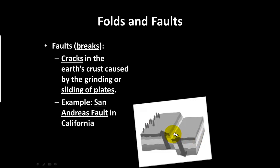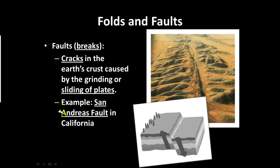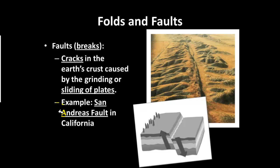Faults are different from folds. Faults are breaks or cracks in the Earth's surface caused by plates grinding or sliding apart. A well-known example is the San Andreas Fault. With a fold, you see the land making a wave pattern; with a fault, you see the land separating into two different levels or completely apart.